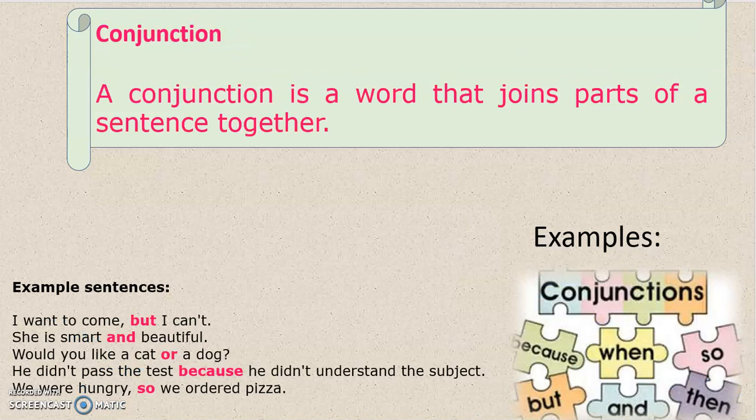Conjunction. A conjunction is a word that joins parts of a sentence together. For example, because, when, so, but, and, then.